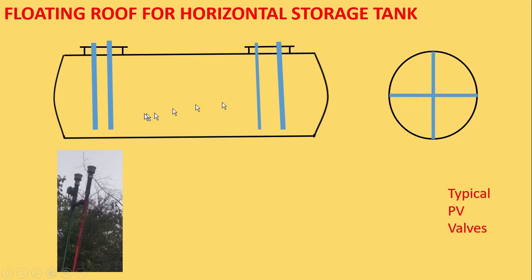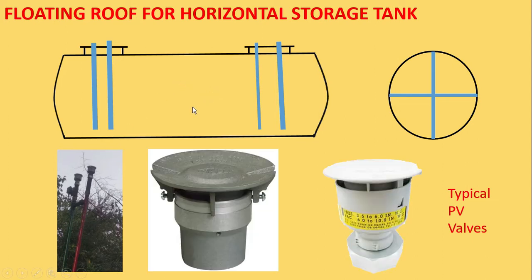Whenever pressure builds up inside the tank, gasoline vapour evaporates and is emitted to the atmosphere. And whenever there is vacuum or low pressure inside the tank, air is sucked in through this vent. This is the typical look of the PV vent, but even with it installed, we are still emitting gasoline vapour into the atmosphere, which is not good for the environment.